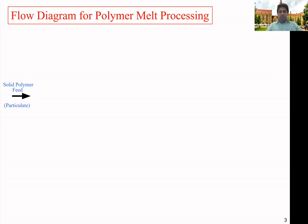In most polymer processing applications, we start with solid polymer feed material, which could be in different forms: pellets, flakes, granules, or powder. Only quite a few processors use molten material as the initial feed, while the majority use solid polymer as the starting material.